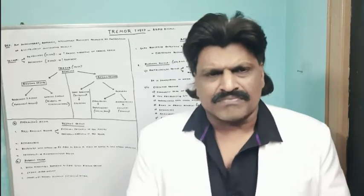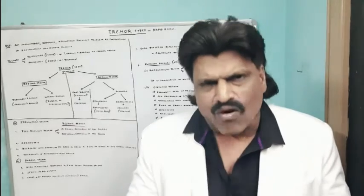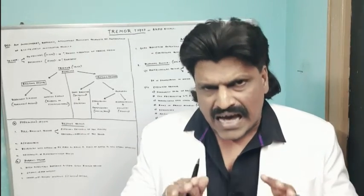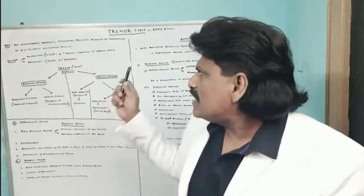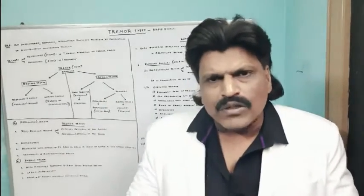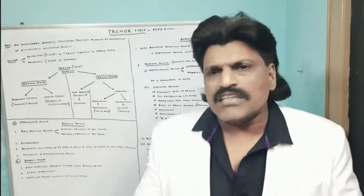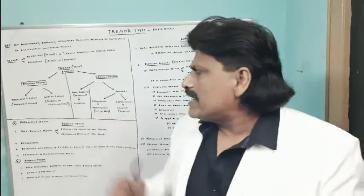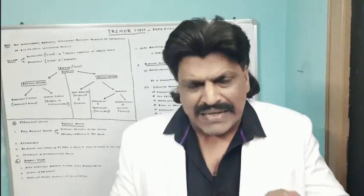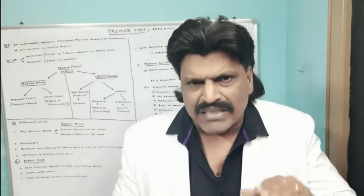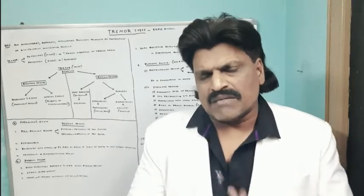What is a tremor? A tremor is an involuntary, rhythmic, oscillatory movement produced by contraction of reciprocally innervated muscles. So it is an involuntary, basically rhythmic and oscillatory movement. This is tremor.